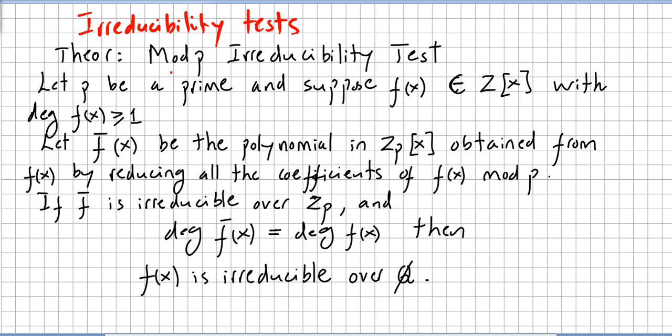The theorem says a mod p irreducibility test. Let p be a prime and suppose f(x) is a polynomial in the ring of integers with degree greater or equal than one, and let f̄(x) be the polynomial in Z_p obtained from f(x) by reducing all the coefficients of f(x) modulo p.